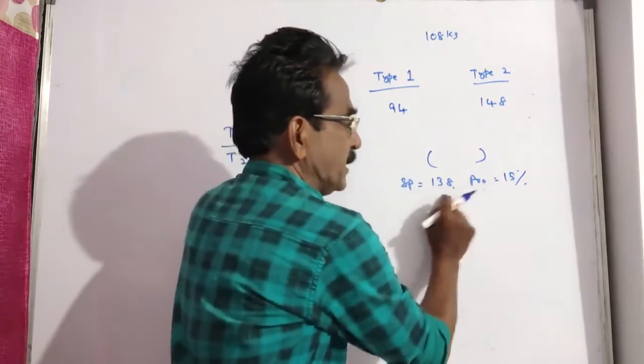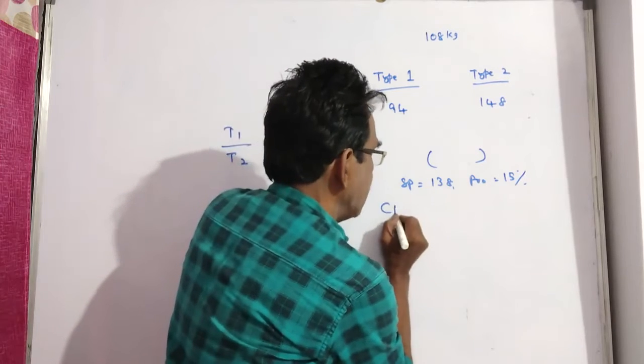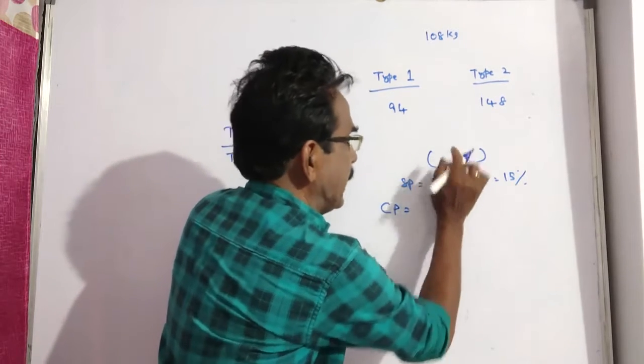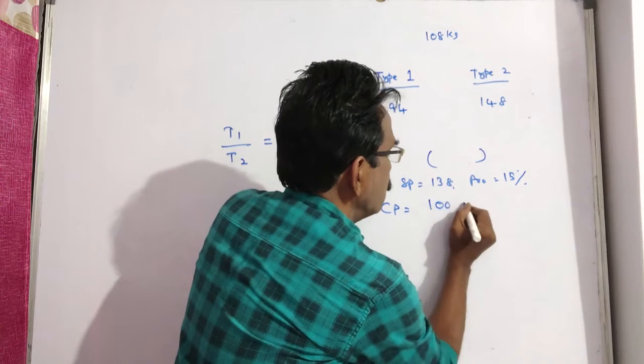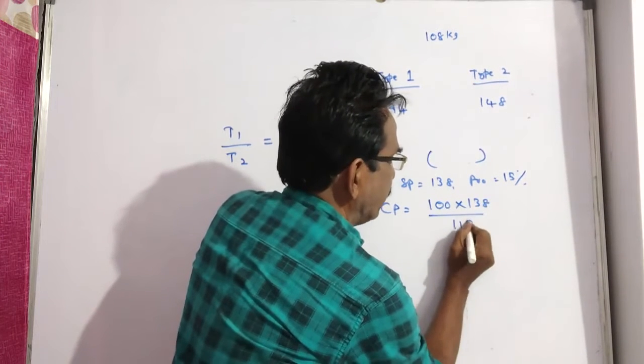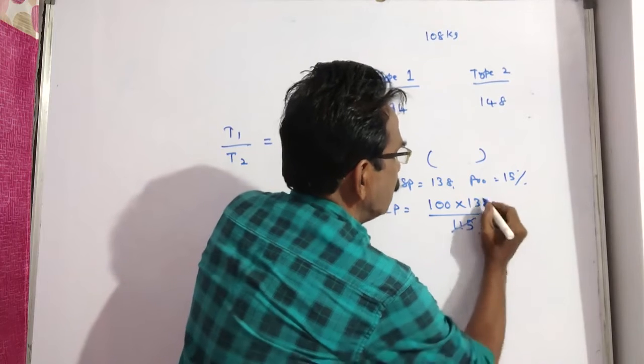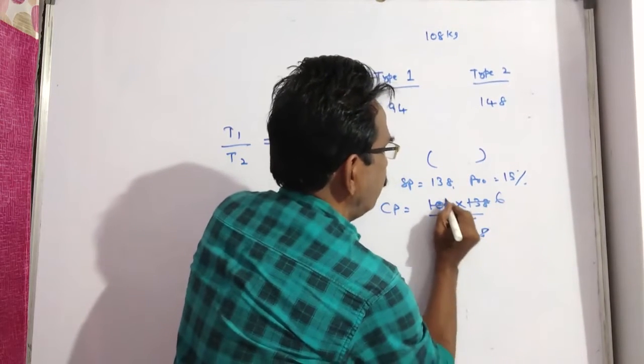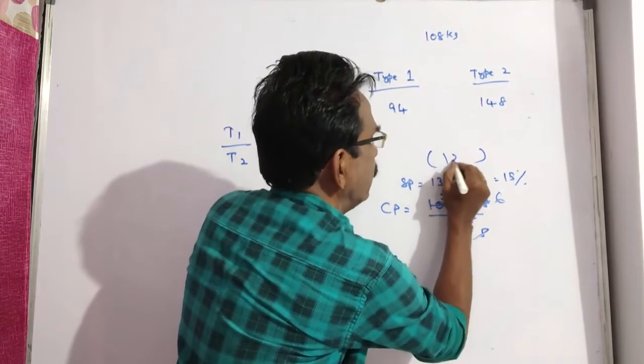From this data, we have to find the cost price and put the cost price at this place. Cost price is equal to 100 into sold price by 100 plus profit. 23 times 5, 23 times 6, 5 times 1, 5 times 20, 26, 120.